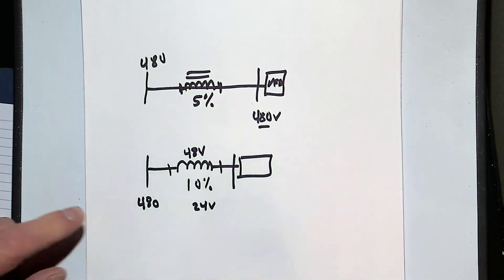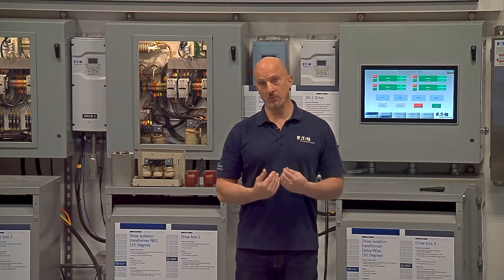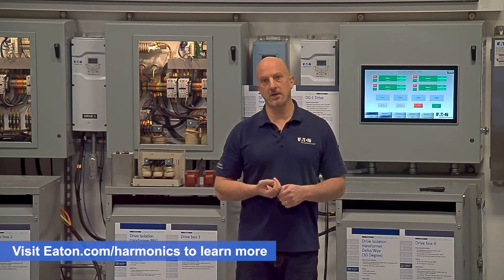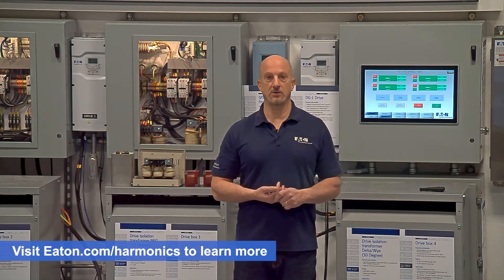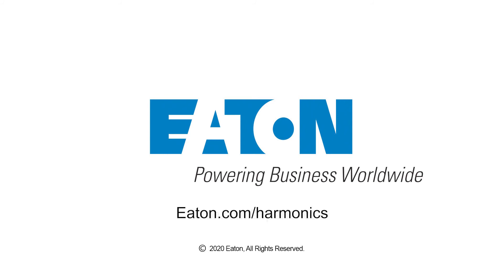So that's why, when we take a look at reactors and we put them in front of a drive, we don't get the same voltage drop as the percent reactants that we add to the system. So again, we would encourage you to use at least 5% on your drive to minimize the harmonic, and the benefit of adding that choke is significant.